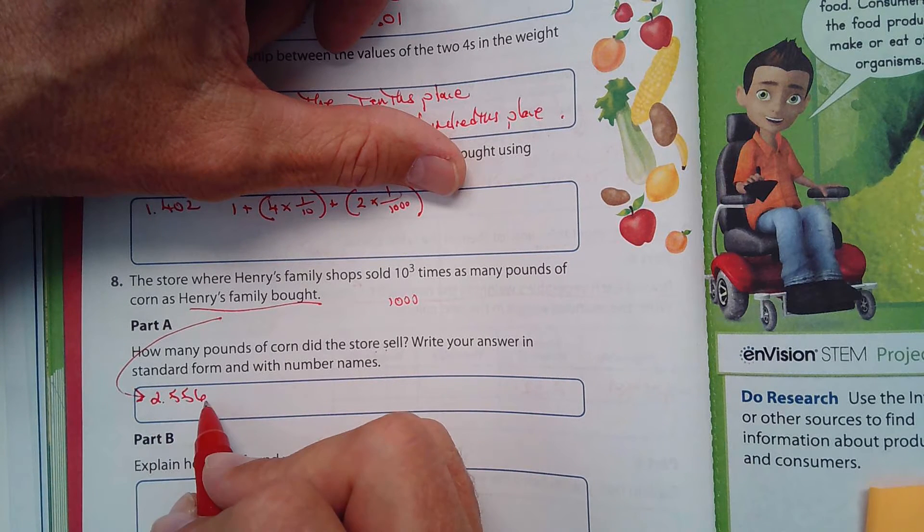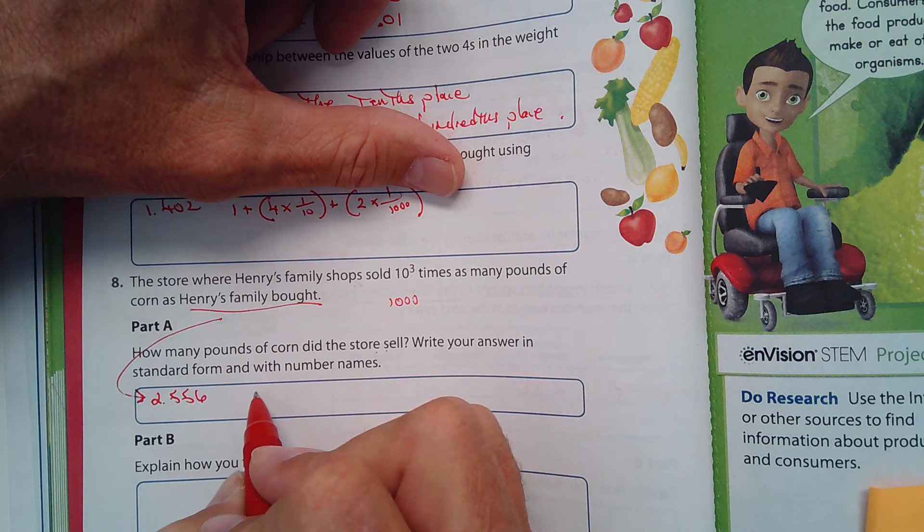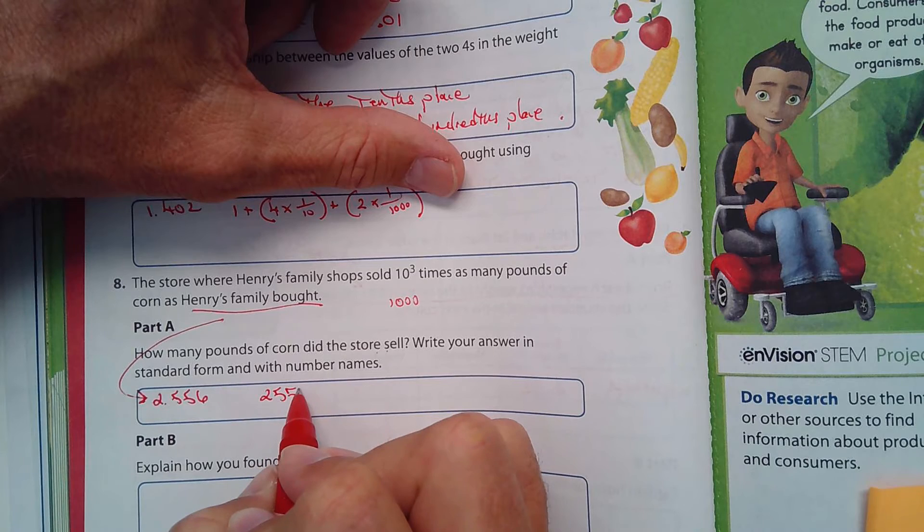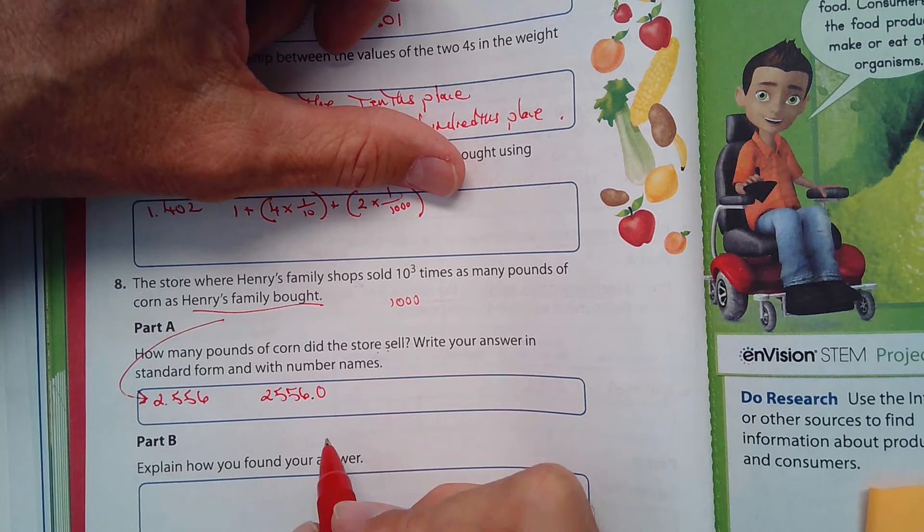1, 2, 3 places. So it's 2,556. And I could just put a .0 pounds.